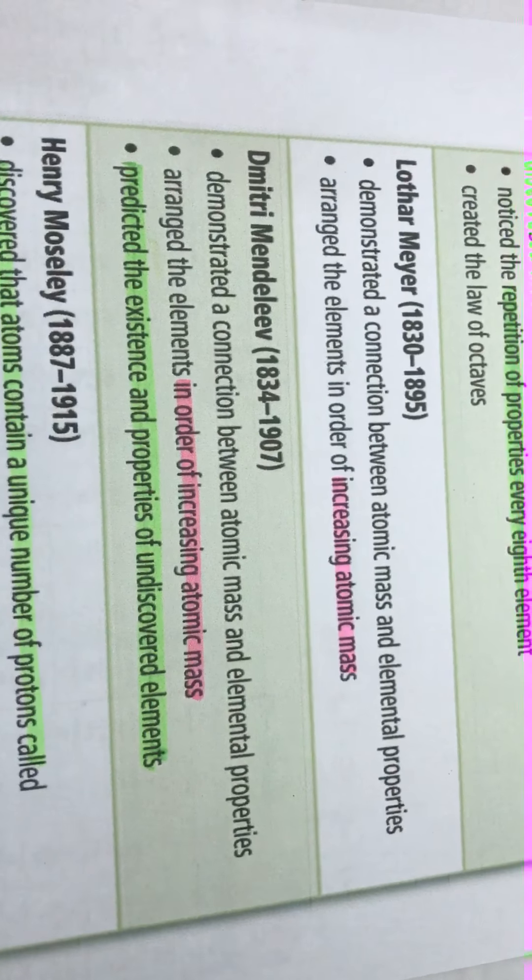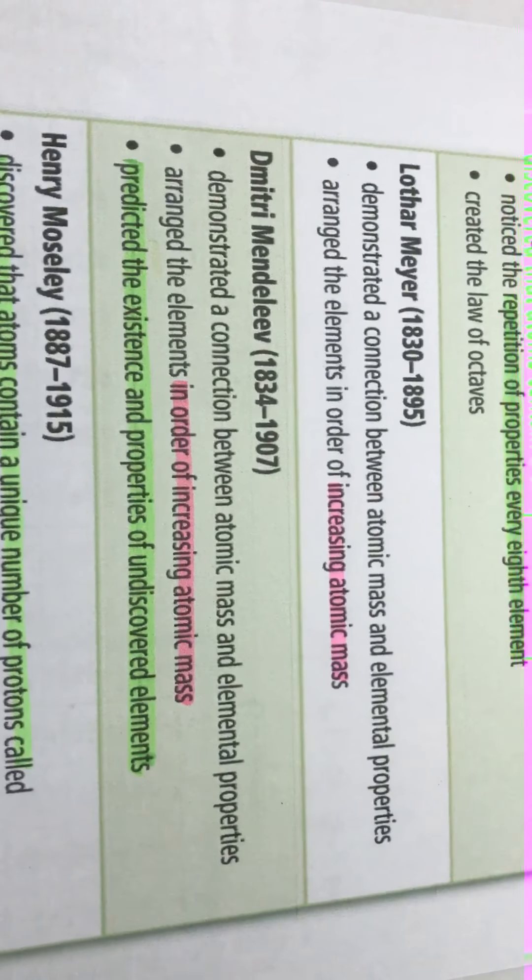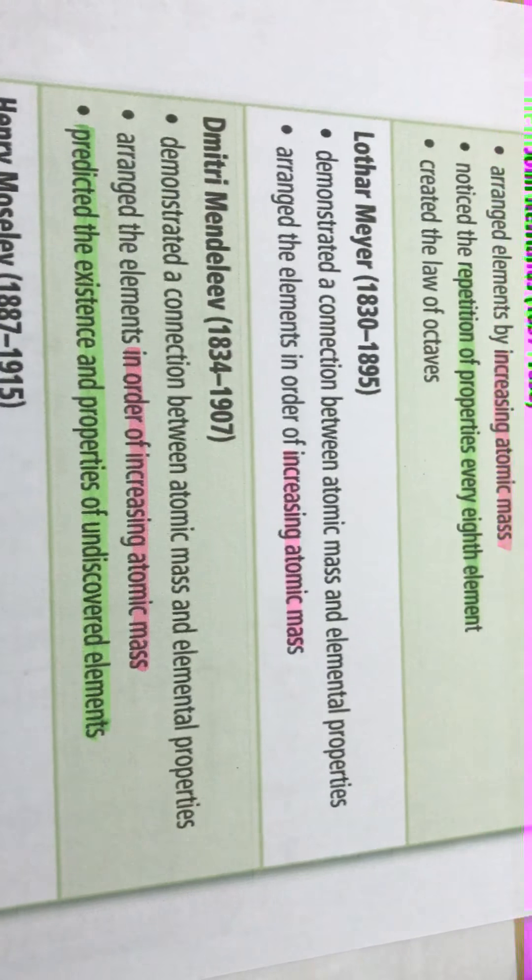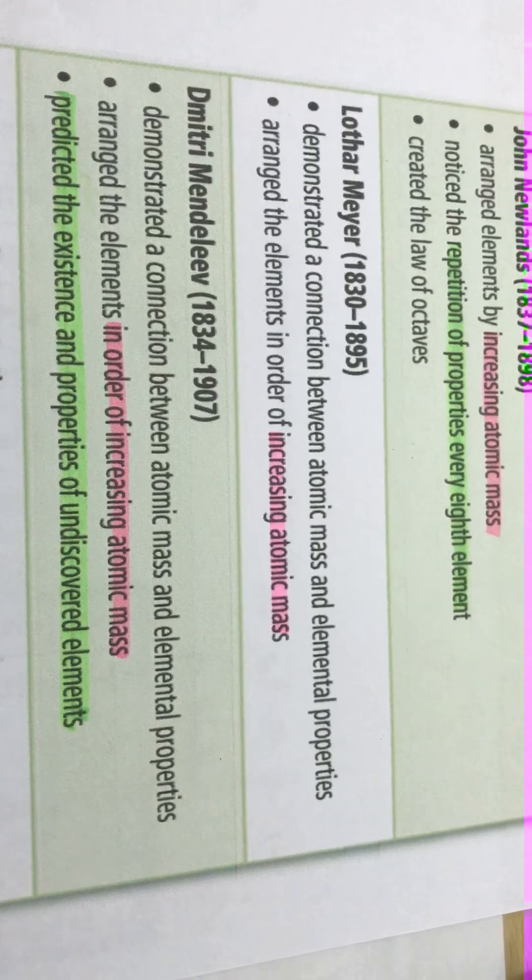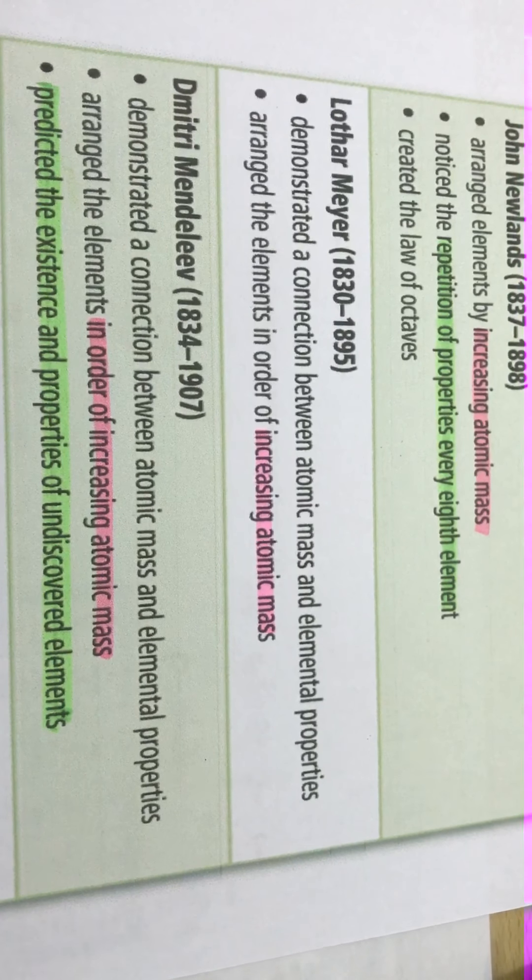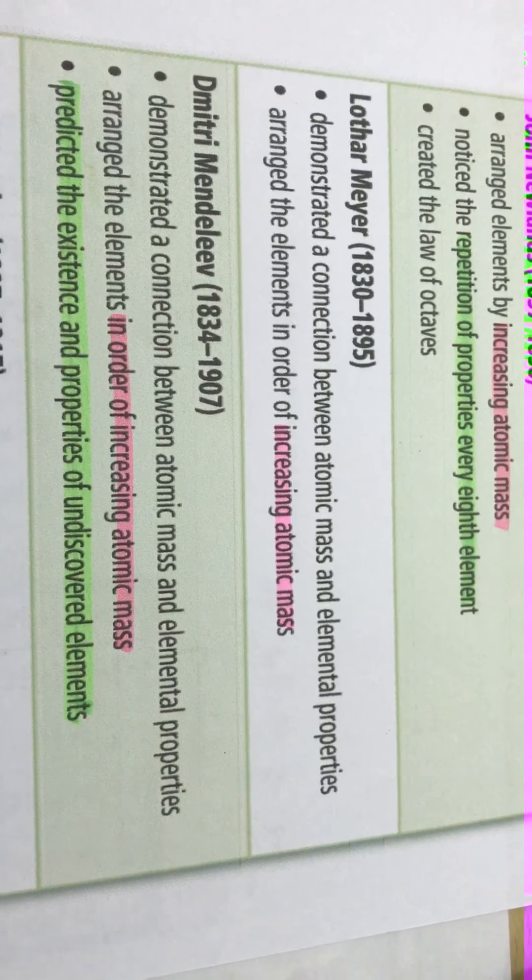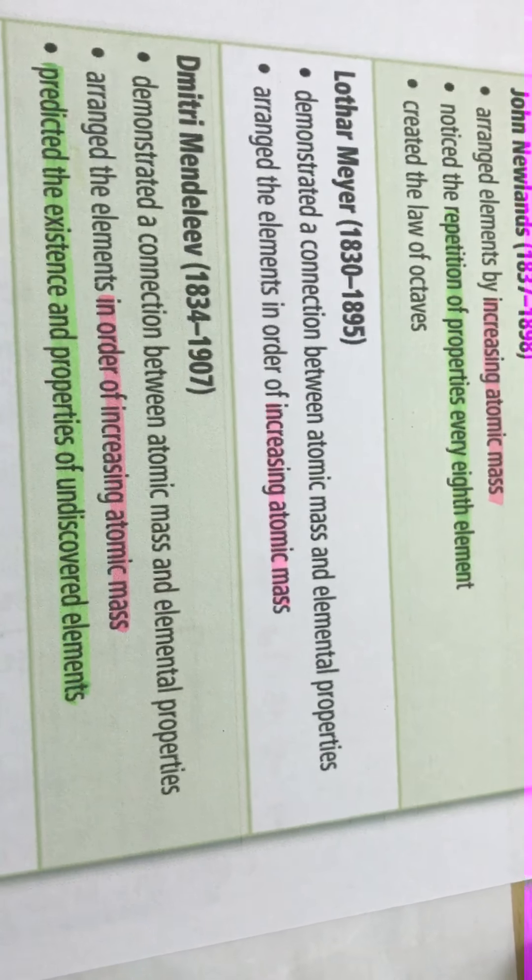Lothar Meyer looked at the arrangement of the elements also increasing atomic mass the same as the other two, but he said that there was a connection between the atomic mass and the elements' properties. So he looked and combined those two.